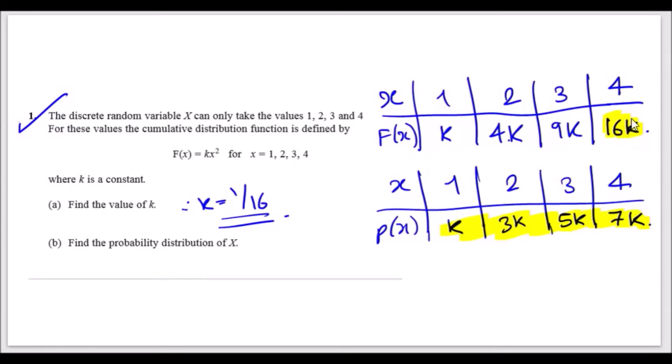One property of the cumulative distribution function is that the final value represents all the probabilities summed up. So essentially, 16k equals the sum of all the probabilities, which means this equals 1. So to find the value k, well k is 1 over 16.